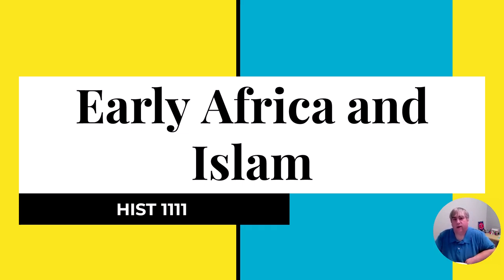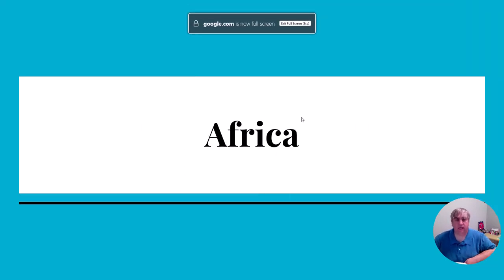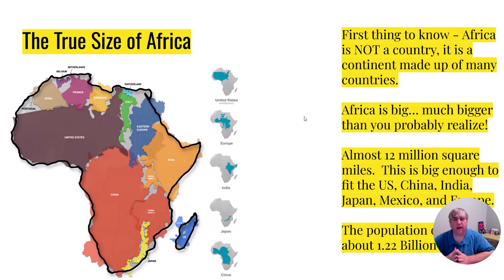Good morning. Today's lecture is about early Africa and Islam. First, I want to talk about Africa — I don't know if you actually realize how big Africa is, so I put a map here for you. Africa is not a country; it's actually a continent. You'd be amazed at how many people get that mixed up. Africa is made up of dozens of different countries. It's 12 million-plus square miles and over 1.25 billion people now. Here are just some other places in the world that fit inside of Africa, and you can see there's still space left over.